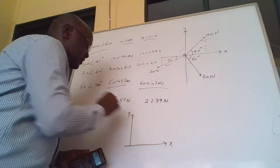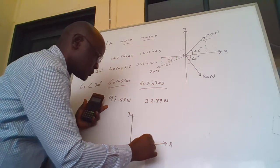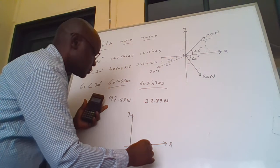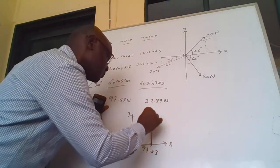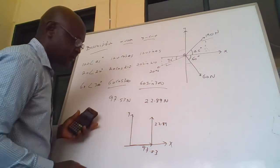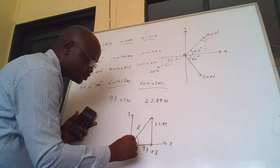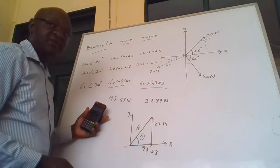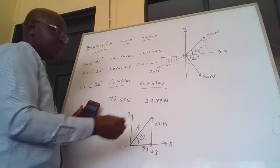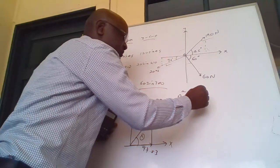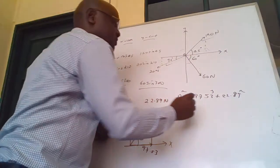Now that we have the two component forces, we scale the diagram. This is the X-axis and this is the Y-axis. The positive X component is 97.53 N, and the Y component is also positive at 22.89 N. Therefore, this will be the resultant and this will be the direction. We apply the Pythagorean theorem: R squared equals 97.53 squared plus 22.89 squared.